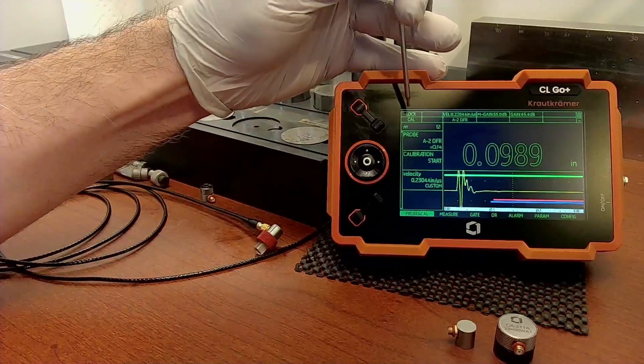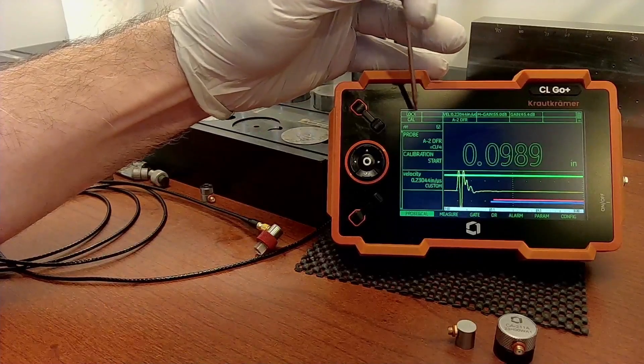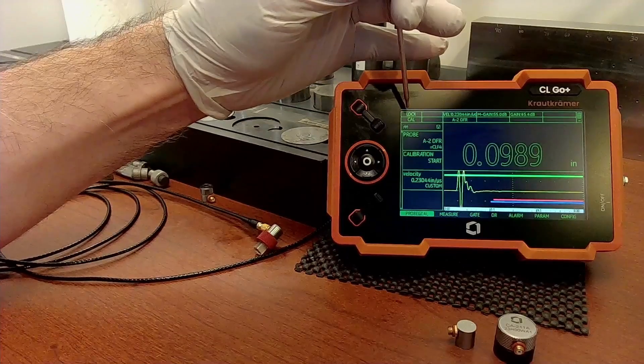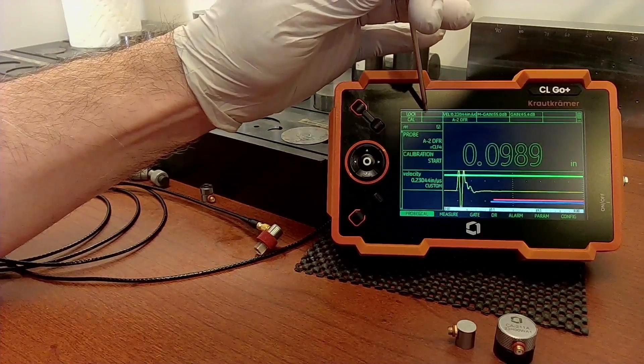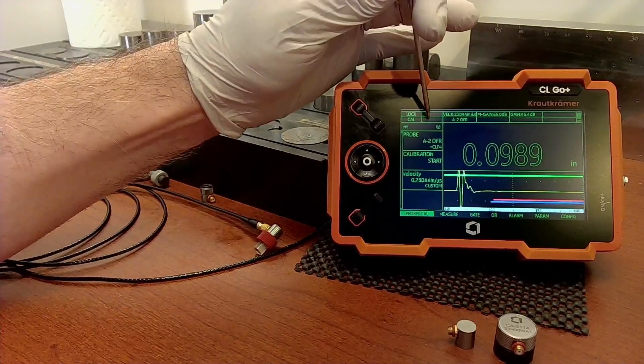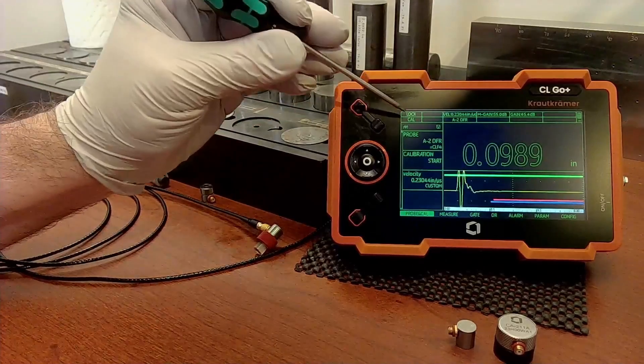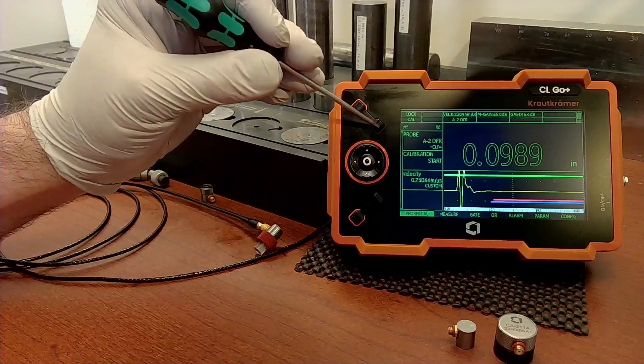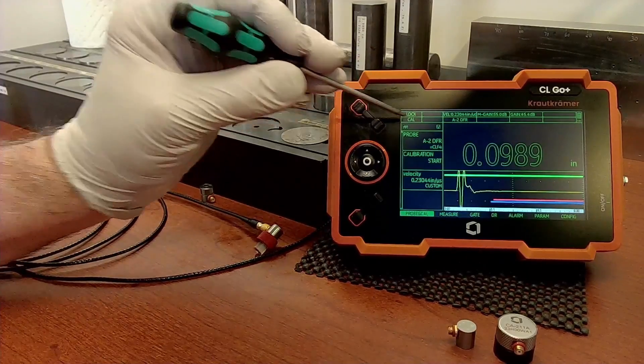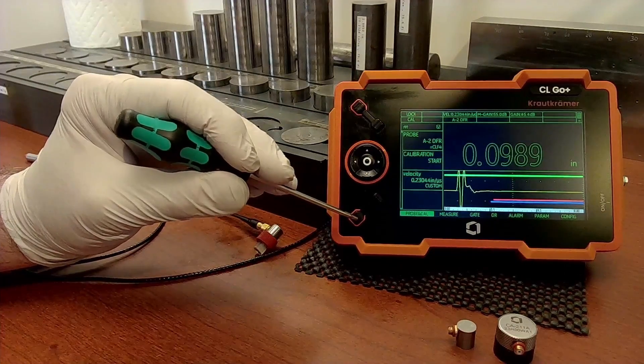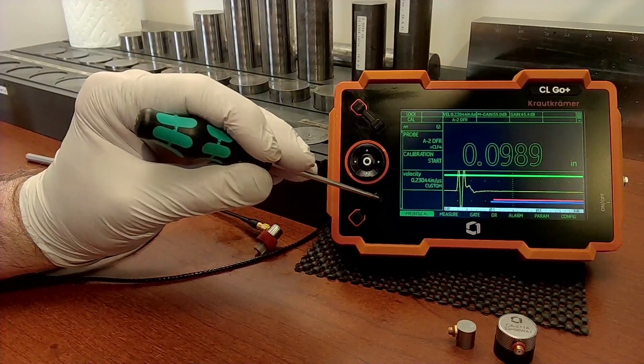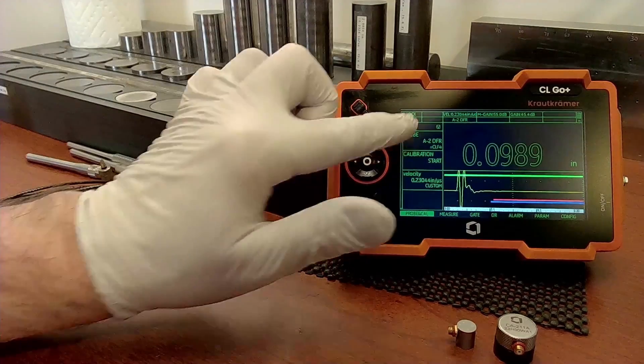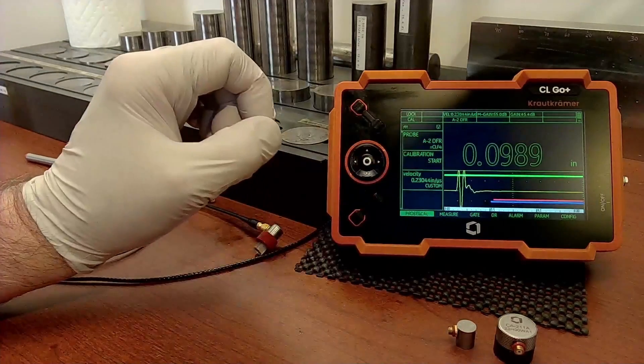One thing to be aware of in the upper left corner of the screen, there are four small boxes. Right now I have one box is lock, this one's blank, this one's cal, this one's blank. So lock is the function performed by this function key. This function key is unassigned at the moment. Down in this corner is the cal and this function key is unassigned at the moment. As we go through different processes on the instrument, you may see those function keys change.